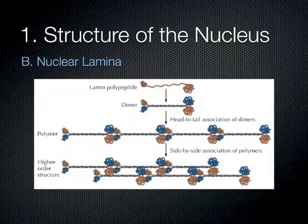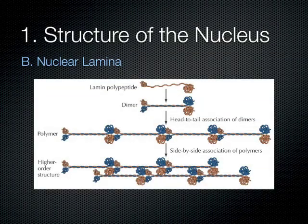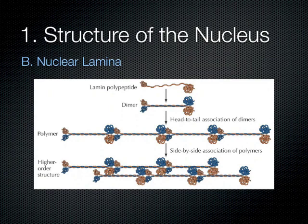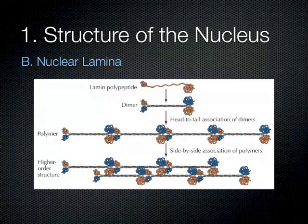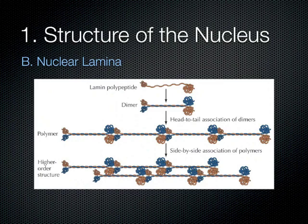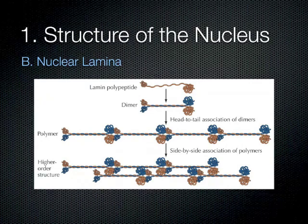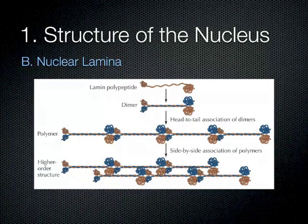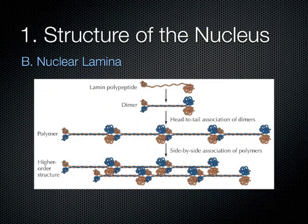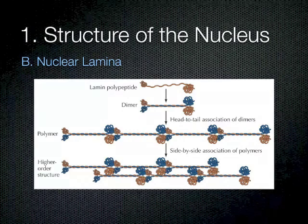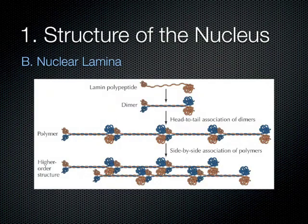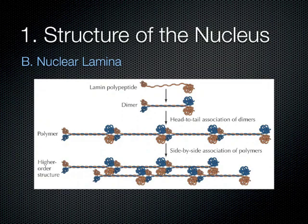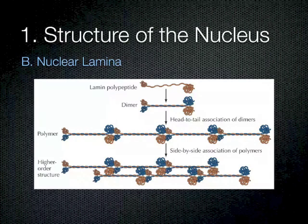The proteins forming that mesh are called lamins, and there are four different lamins: Lamin A, Lamin B1, Lamin B2, and Lamin C. These four lamin proteins form homodimers where the heads are next to heads and the tails next to tails. Each dimer has the ability to interact with another dimer via head-to-tail interactions, allowing these proteins to form very long chains.